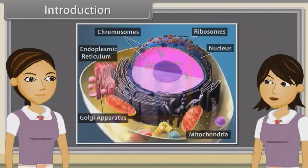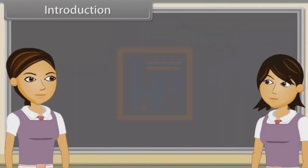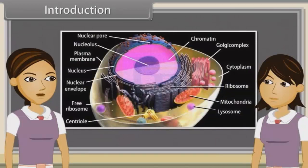We have discussed structure of eukaryotic cells and structure and functions of cell membrane and cell wall already. Now we will discuss structure of endomembrane systems. We will also observe structure of endoplasmic reticulum, Golgi apparatus, lysosomes, vacuoles, mitochondria, plastids and ribosomes.